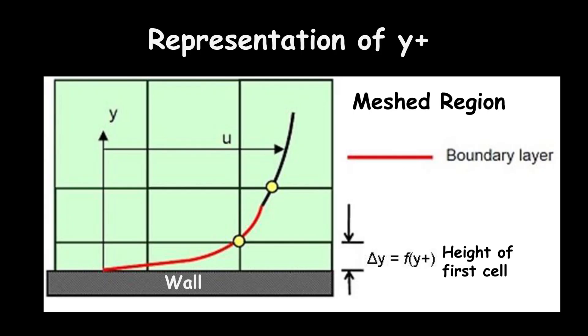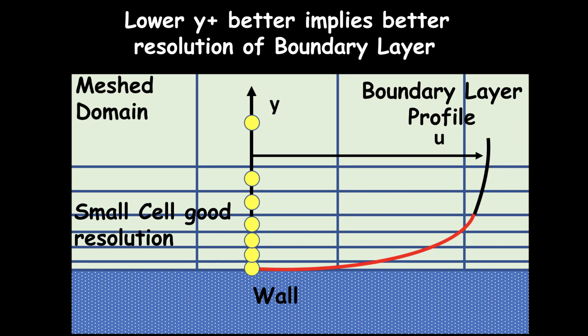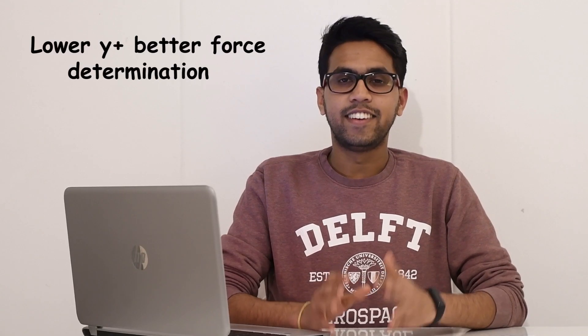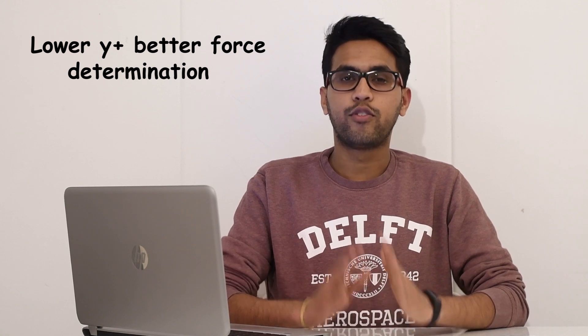Next, we have to decide the size of your elements. This is decided by something called as Y+. Y+ is a non-dimensional wall normal distance, or in simple words, is the height of the first cell next to your airfoil surface. This is important because Y+ determines the accuracy of your boundary layer capture. And this in turn determines the accuracy of your forces. The rule of thumb for calculating Y+ is to be as low as possible. How low should Y+ be? Ideally, it should be around 1. This means that your boundary layer is accurately captured.